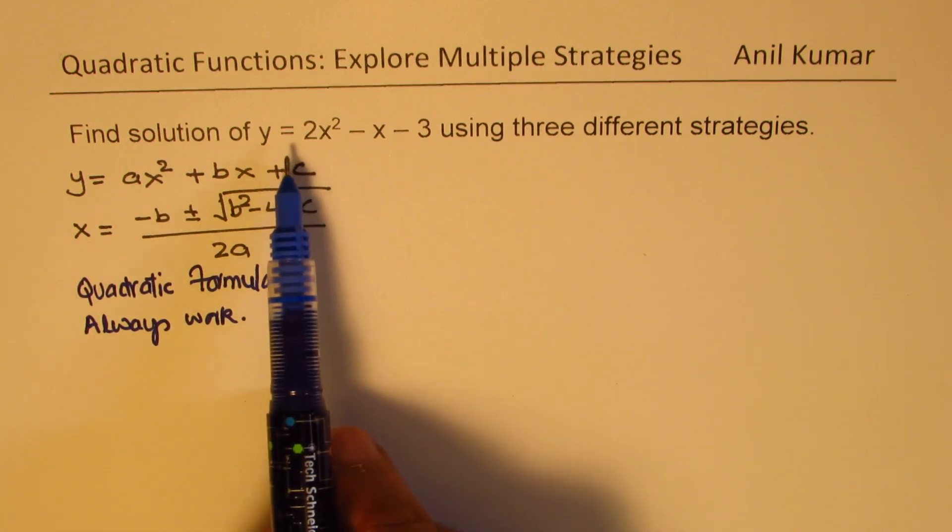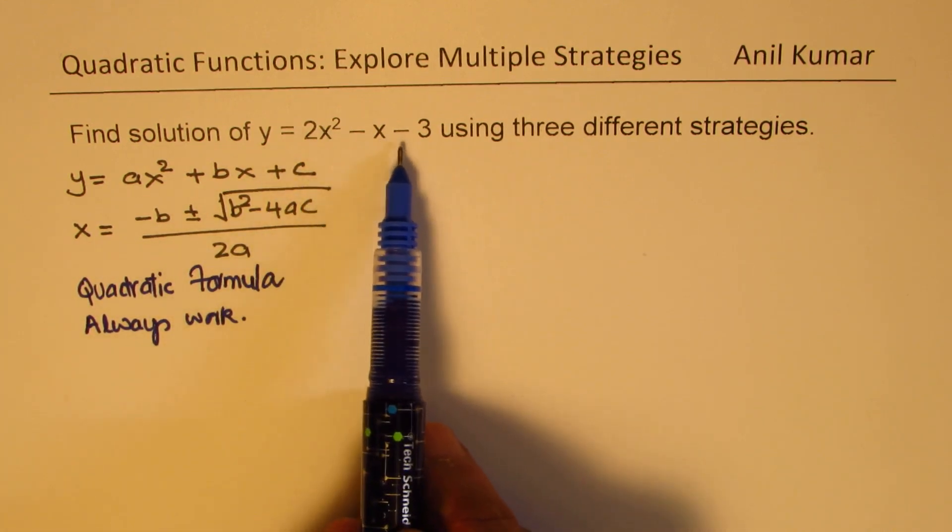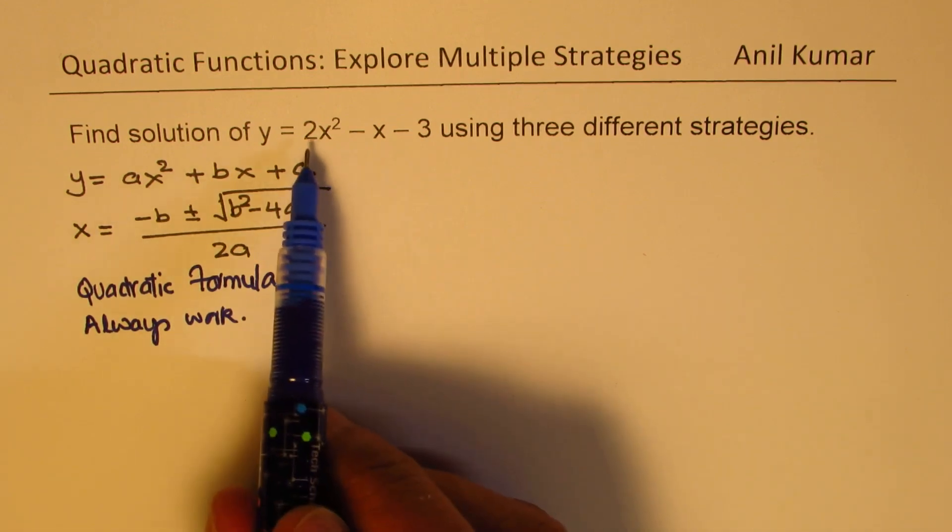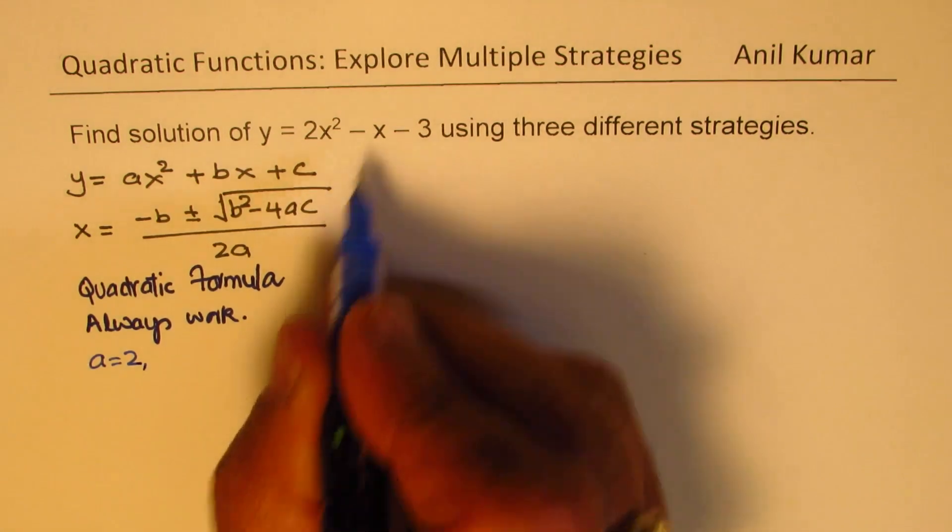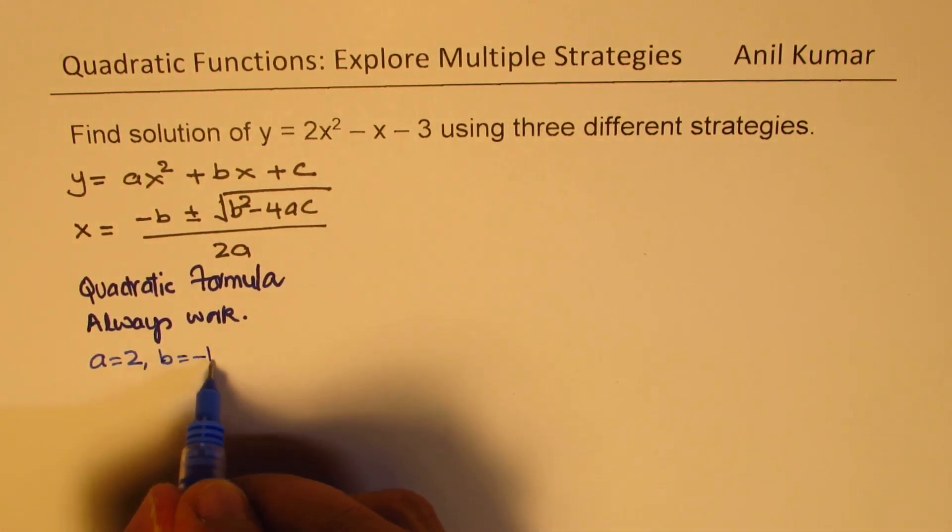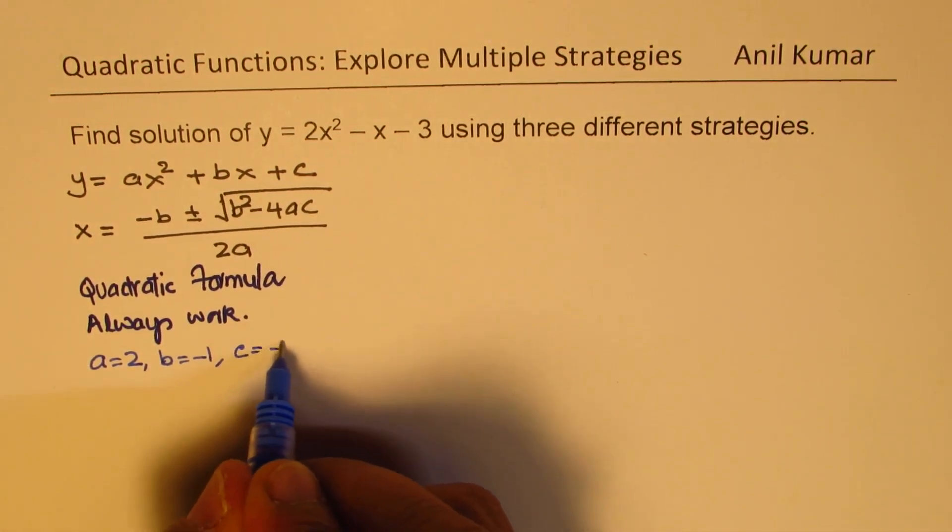Now let us take our equation y equals 2x squared minus x minus 3 and solve. In the given equation the value of a is 2, the value of b is minus 1 and c is minus 3.